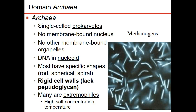Archaea are very similar to bacteria, but they do not have peptidoglycan in their cell wall. They have a different protein structure called pseudomurine or pseudopeptidoglycan. Their shape is very similar to bacteria, but they can be extremely unique in shape as well. Archaea tend to be extremophiles — organisms that can live in places like volcanoes, hydrothermal vents, and the Dead Sea. An example of an archaean is a methanogen.